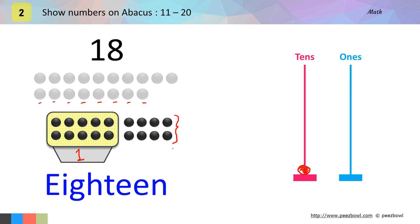Because we have 8 balls outside the box, I draw 1, 2, 3, 4, 5, 6, 7, and 8 circles on the ones line. This is the way to show 18 on the abacus. Hope you understood this concept.